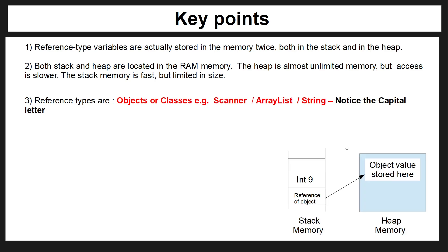For example, an int with value nine is stored only in the stack memory. But when you create an object, you create a reference in the stack, and that reference is linked to the value stored in heap memory. This means the value stored in the heap can be much greater than what you could store in the stack.